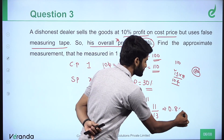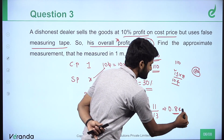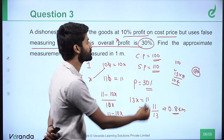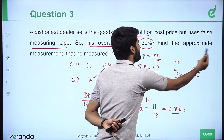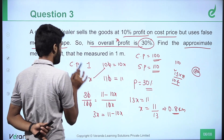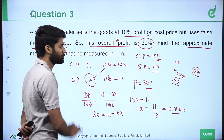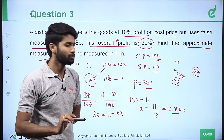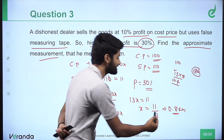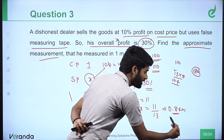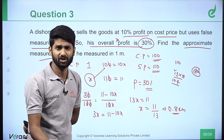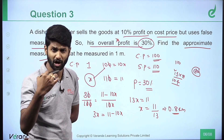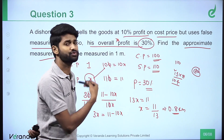13.4 is an approximate score. The answer is 0.84. The option is 0.84.